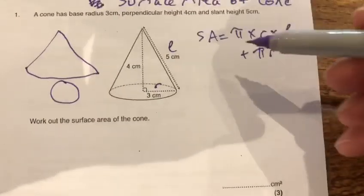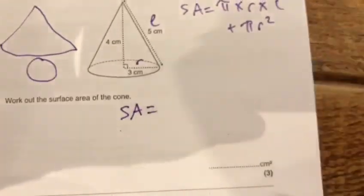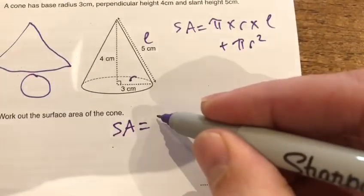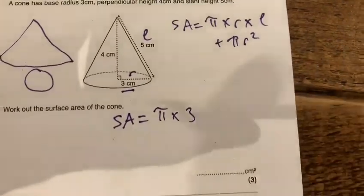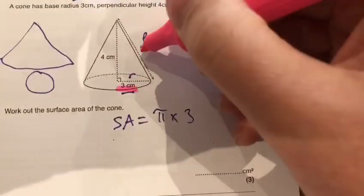So what numbers am I going to put into this formula? So the radius is 3. So it's pi times 3, that's there. And then the slant height is 5. That's there.